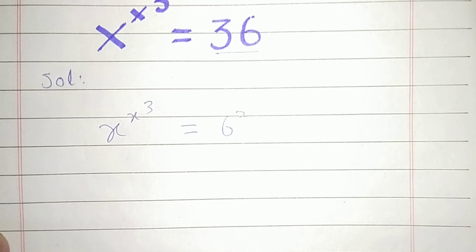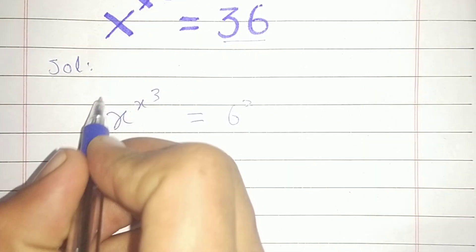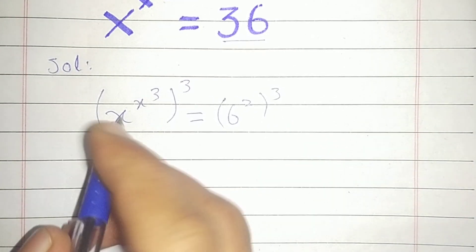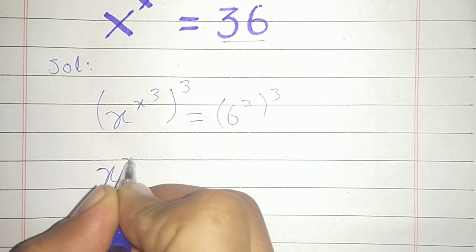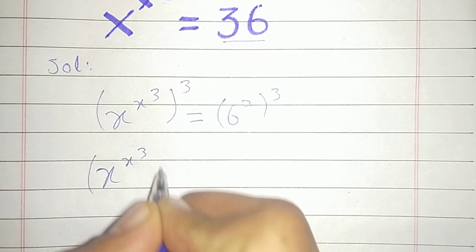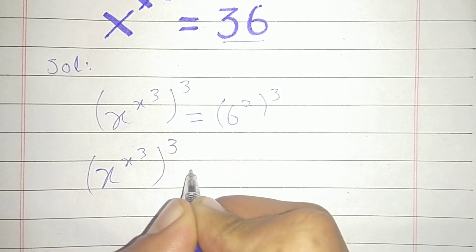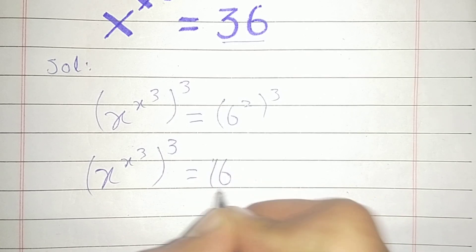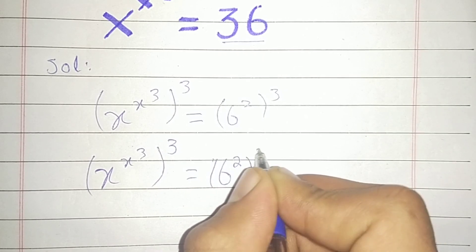Now we take both sides to the power of 3. This becomes (x^(x^3))^3 = (6^2)^3.